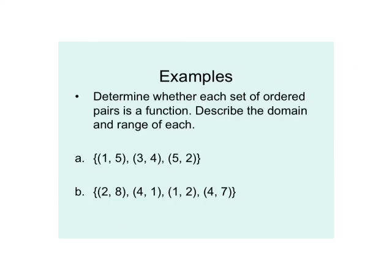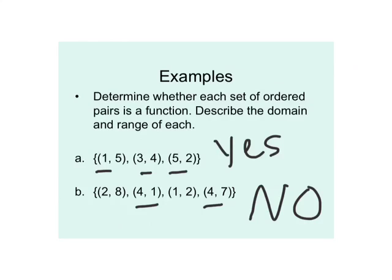Let's get into some examples for determining whether a set of ordered pairs is a function. Number one: yes, it is, because every x value is different. Number two: no — there is a 4 and a 4; an x value is repeated, so it is not a function. The repeated 4s disqualify it.